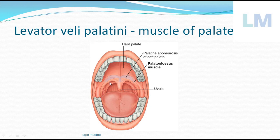Levator veli palatini is one of the muscles of the soft palate. As the name suggests, it elevates the soft palate. It begins from the eustachian tube level and goes down to the soft palate.